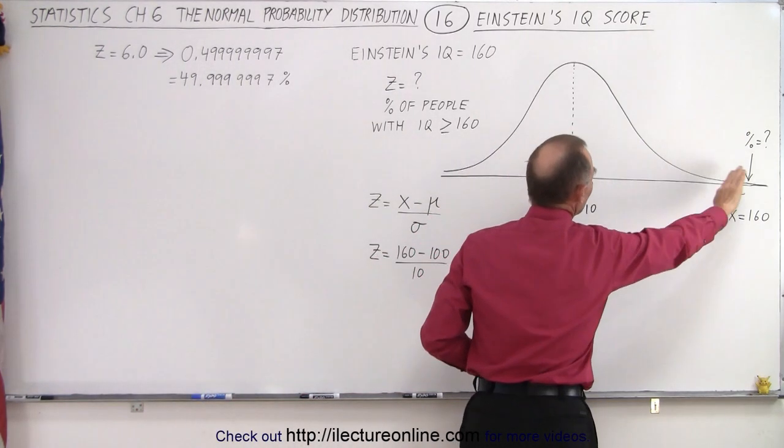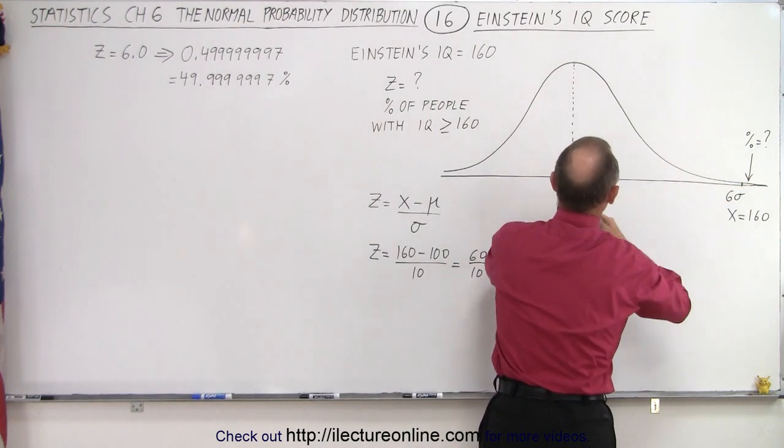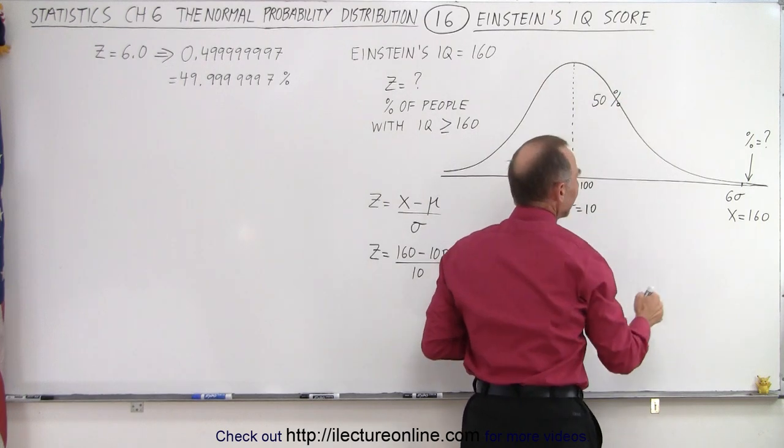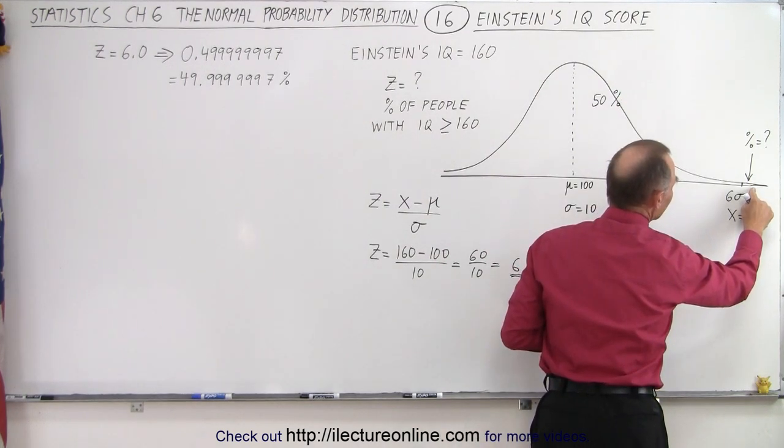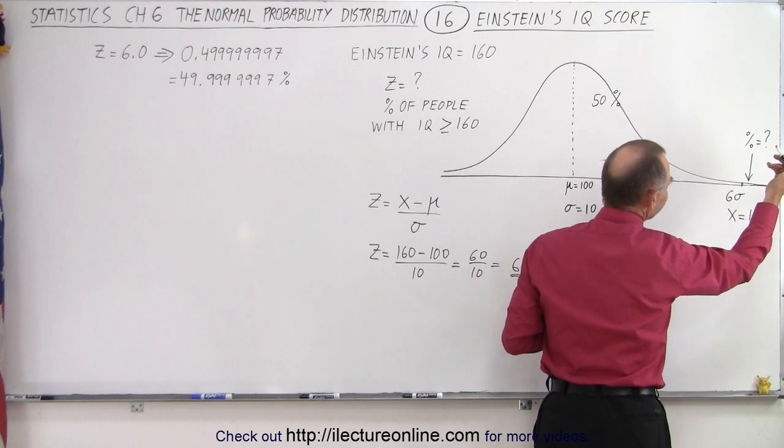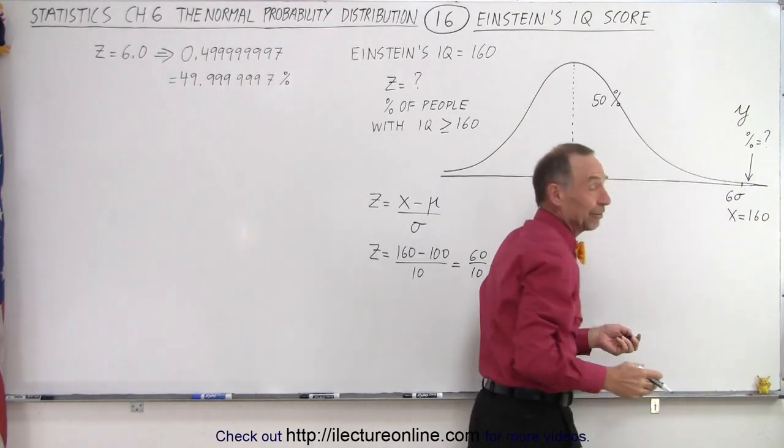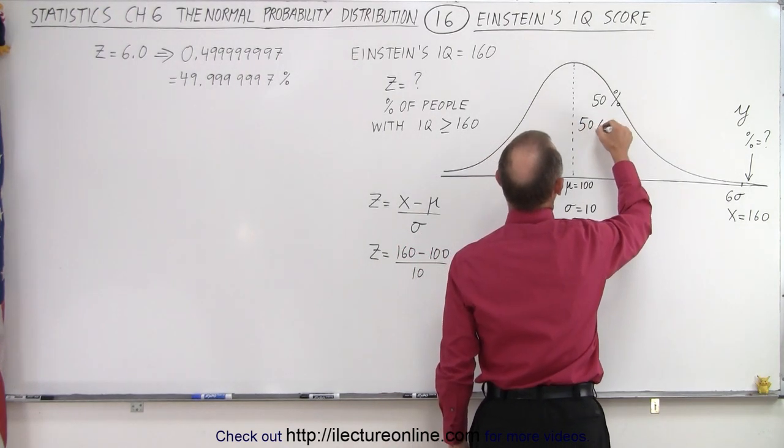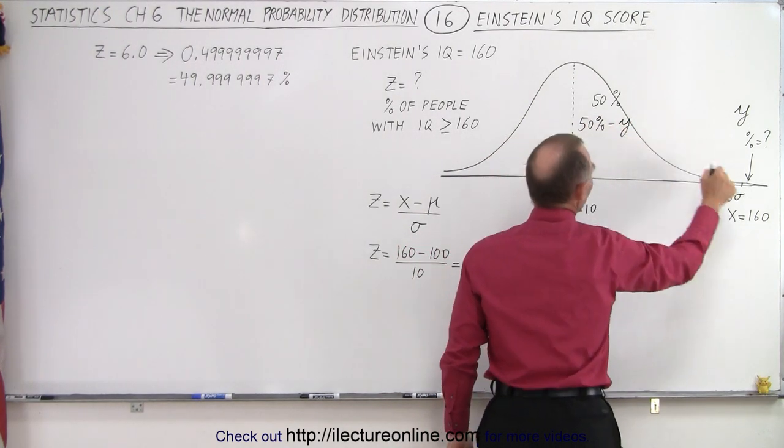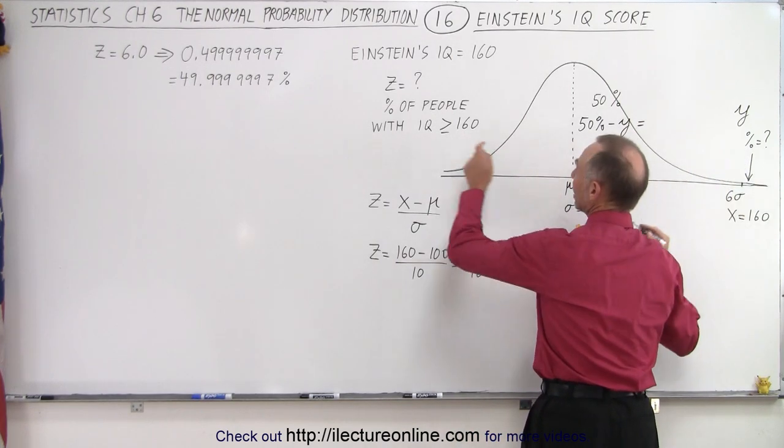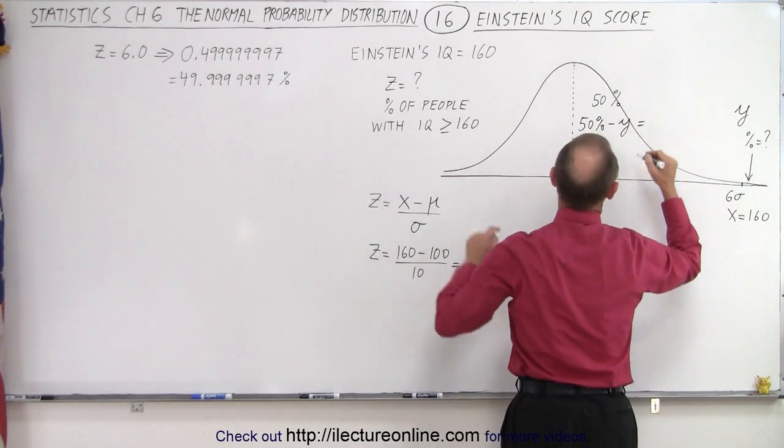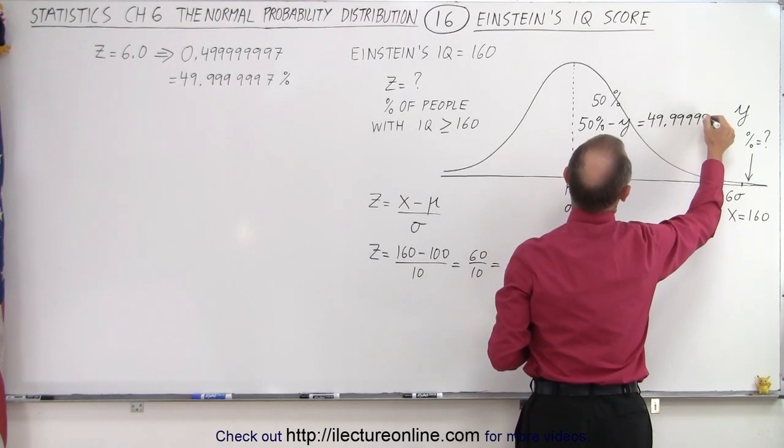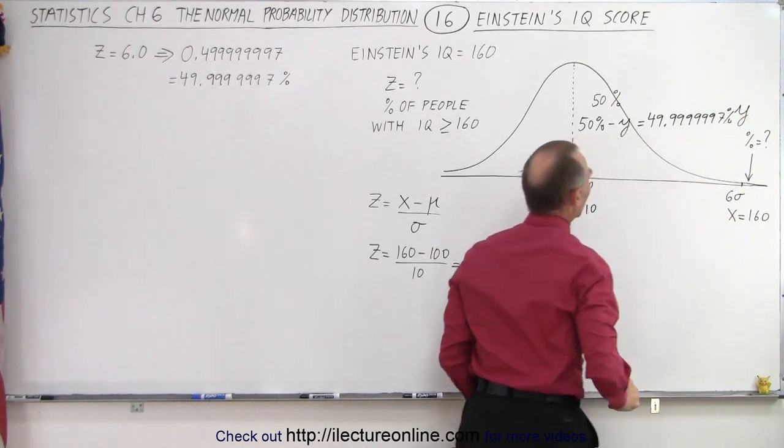So let's say that we have this whole right side of the curve represents 50%. And then we have the small amount of percent we're looking for here. And so let's call that Y, for a lack of anything else, we'll just call it Y. And so we're looking for 50% minus the small amount over here equals the area underneath the curve here, which we get from the Z factor, which is 49.9999997%.